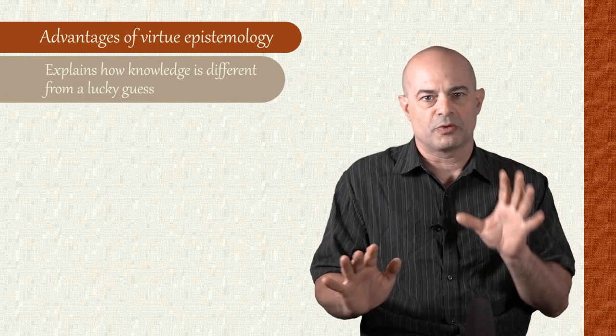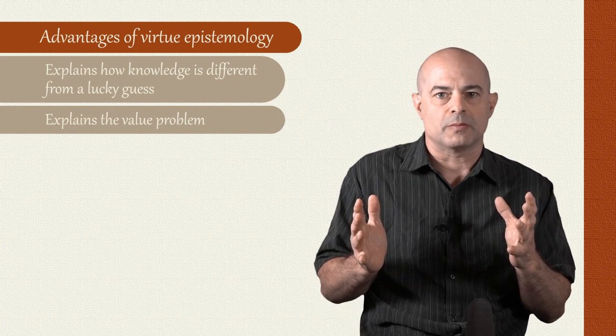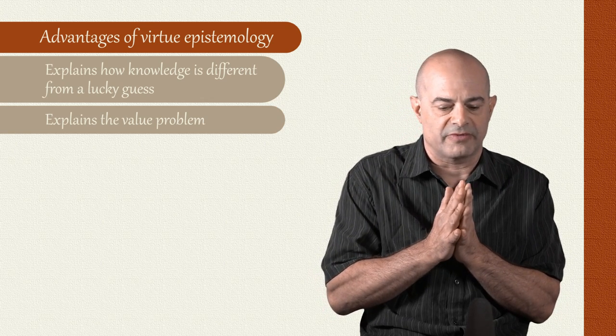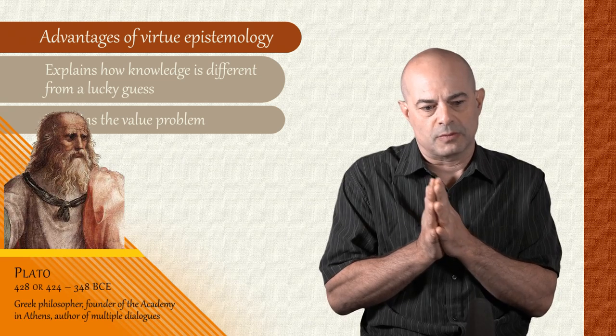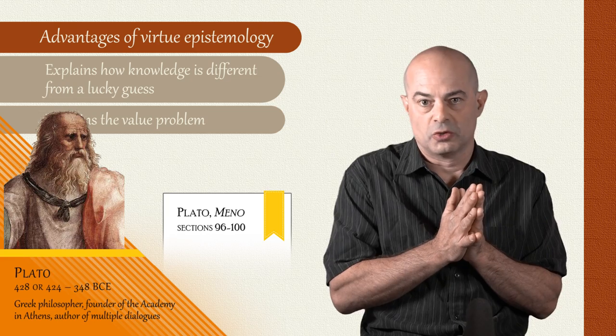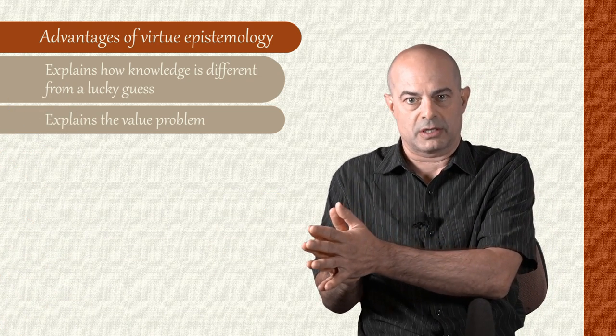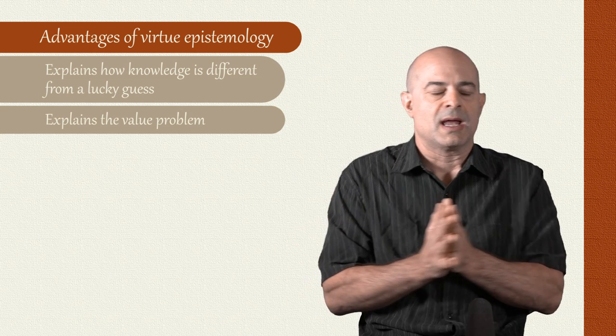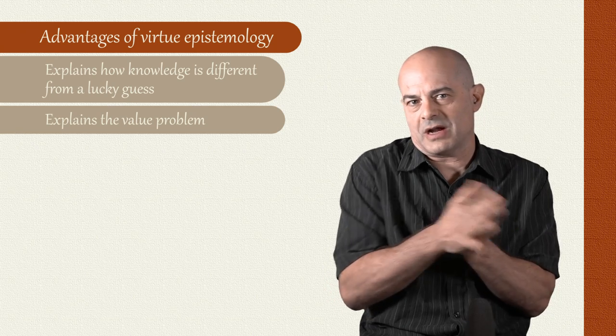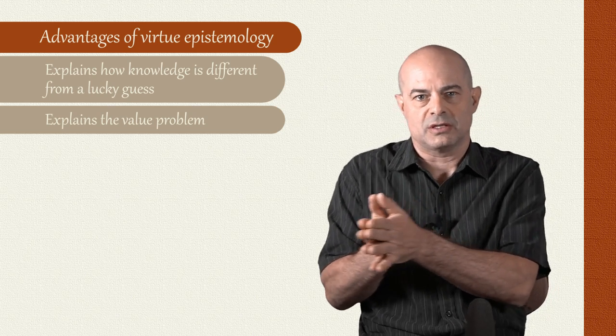Now, this same approach also explains what's known as the value problem in epistemology. It gives you a nice answer to the value problem. So the value problem goes back to Plato's Meno, where Plato is assuming that knowledge is different from mere lucky truth. But now the question he raises is, well, why do we value knowledge over mere true belief or luckily true belief?